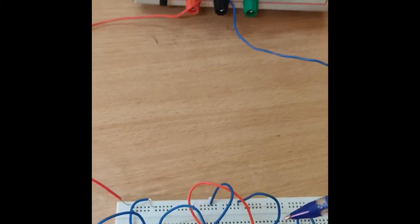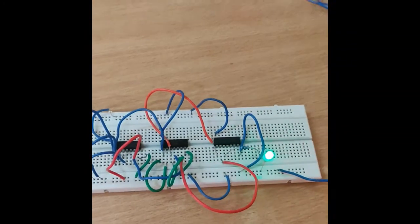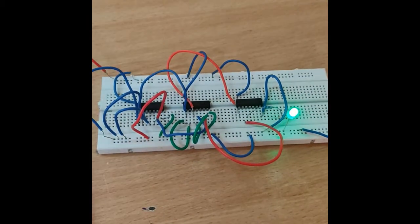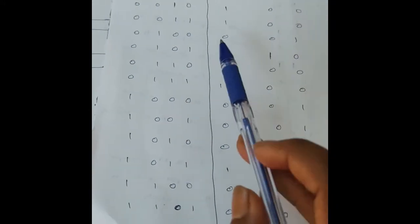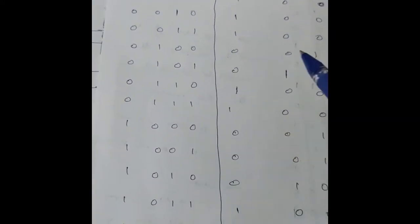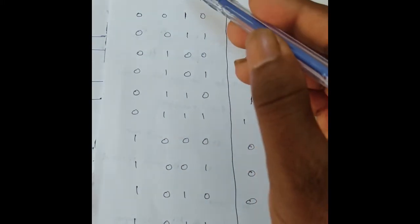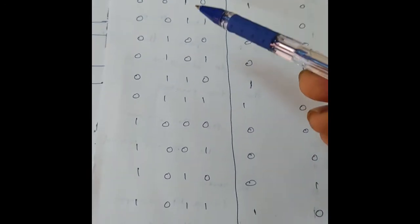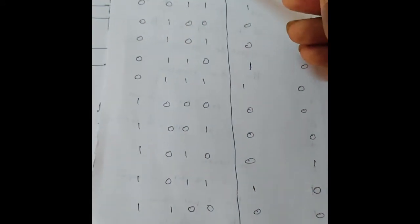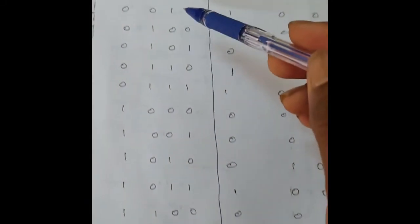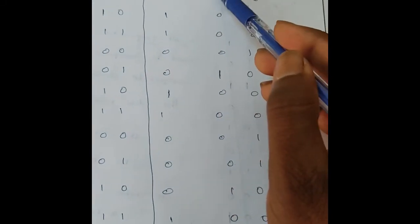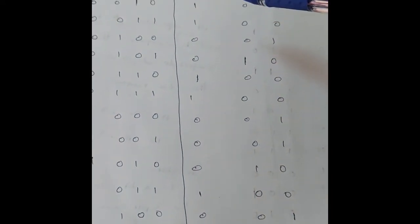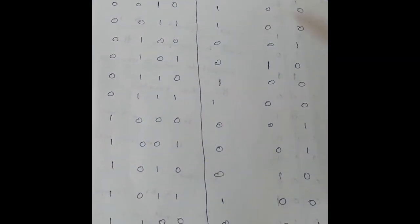Switch on the fixed power supply. This is the function table of the 2-bit comparator — 2 bits for one number and 2 bits for the second number, giving 4 inputs total. 2 to the power 4 equals 16 combinations, from 0 to 15. These inputs cover the A less than B condition, A equal to B condition, and A greater than B condition. We have to verify the A equal to B condition only.